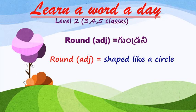Okay children, now Level 2, 3, 4, 5 classes — today's word is: round, R-O-U-N-D, round. Round means shape like a circle — shape like a circle.